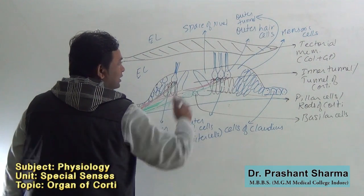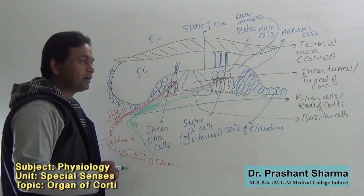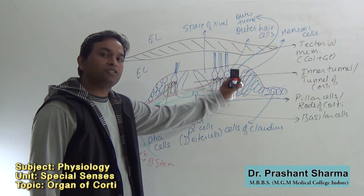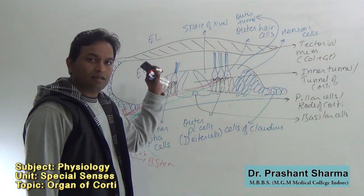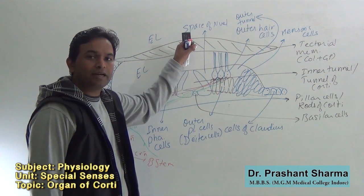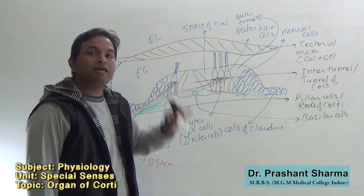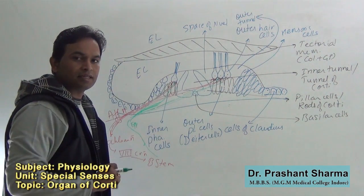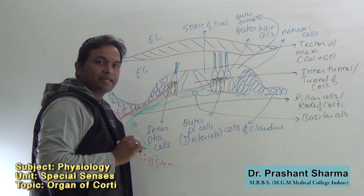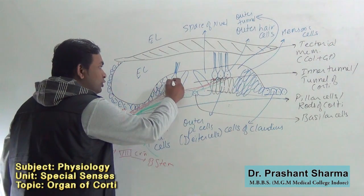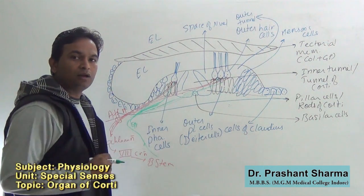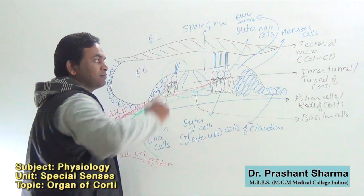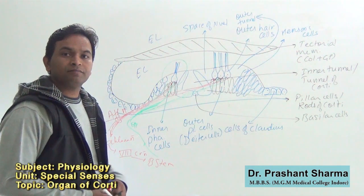There is a lot of difference between inner hair cells and outer hair cells. Inner hair cells are merely 3500 in number and arranged in a single row, while outer hair cells are 20,000 in number and arranged in three rows. The stereocilia of inner hair cells are shorter and do not touch the tectorial membrane, whereas the stereocilia of outer hair cells are longer and embedded in the tectorial membrane. Most importantly, 90 to 95 percent of afferent neurons originate from inner hair cells despite their low number, meaning the actual receptors for auditory stimuli are the inner hair cells. So this is the Organ of Corti.